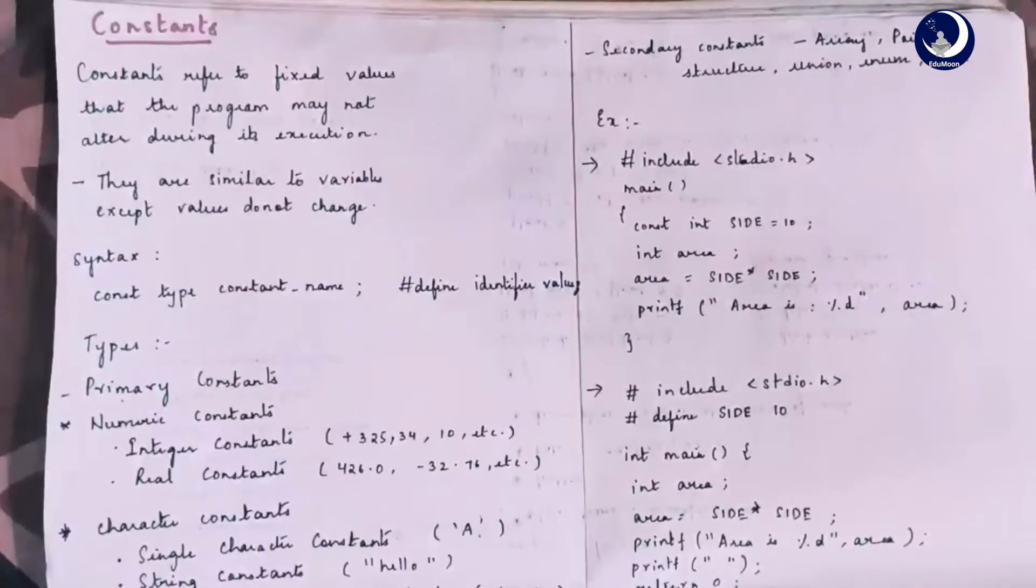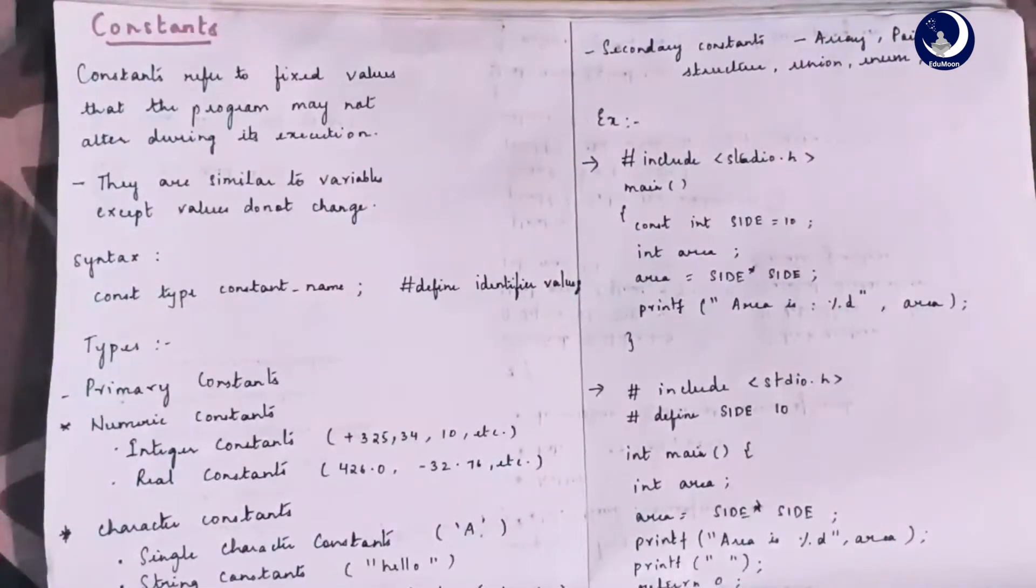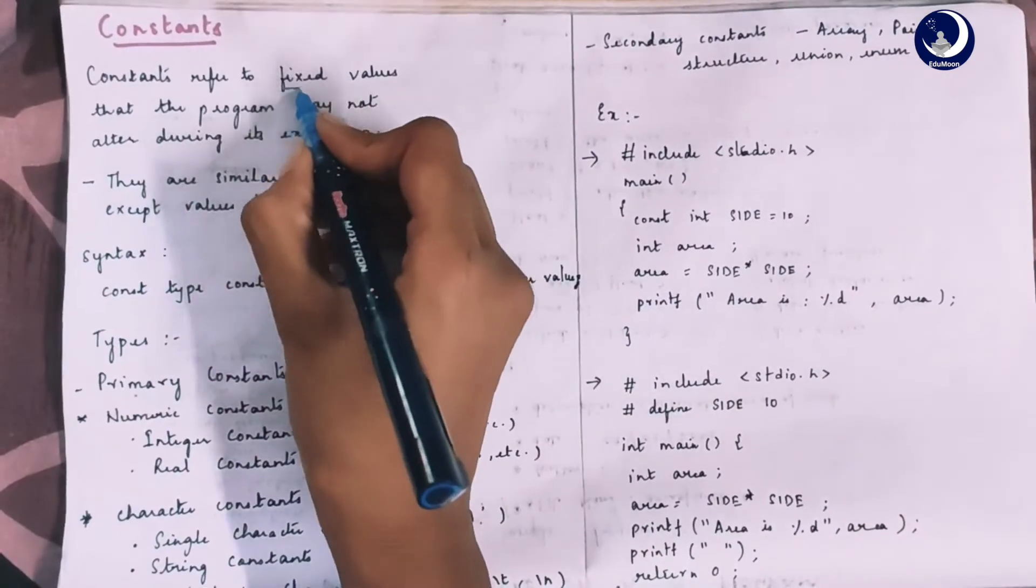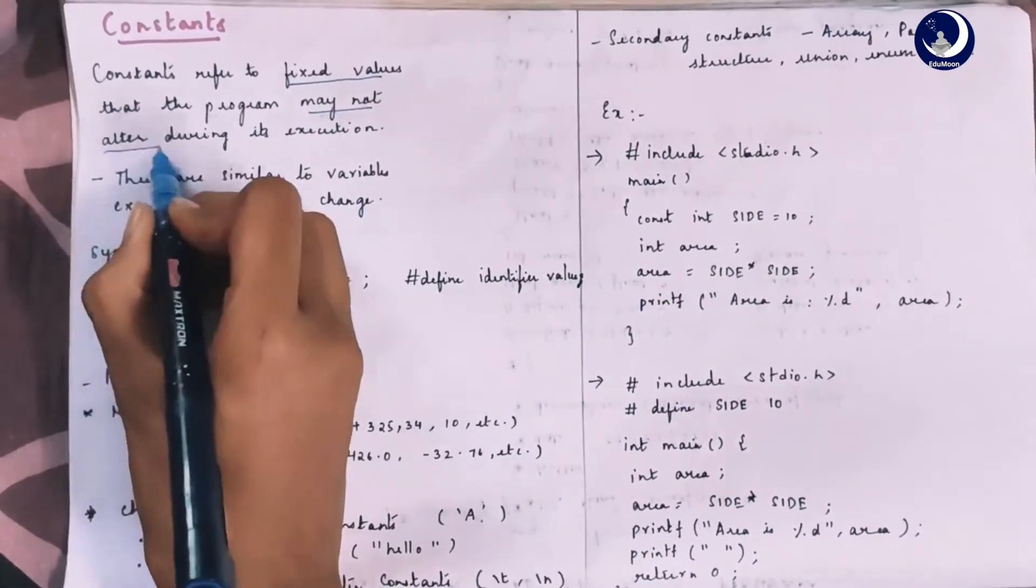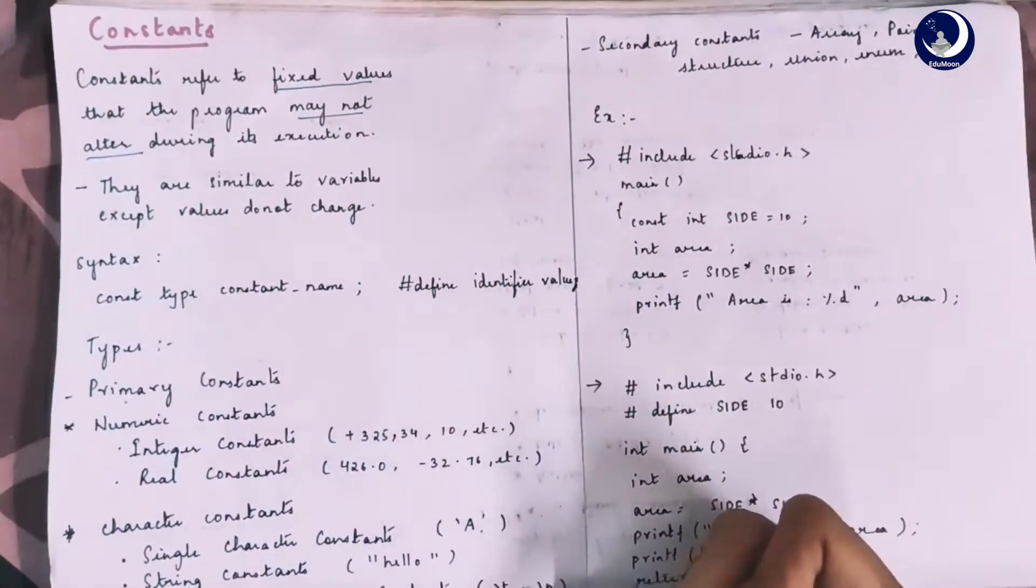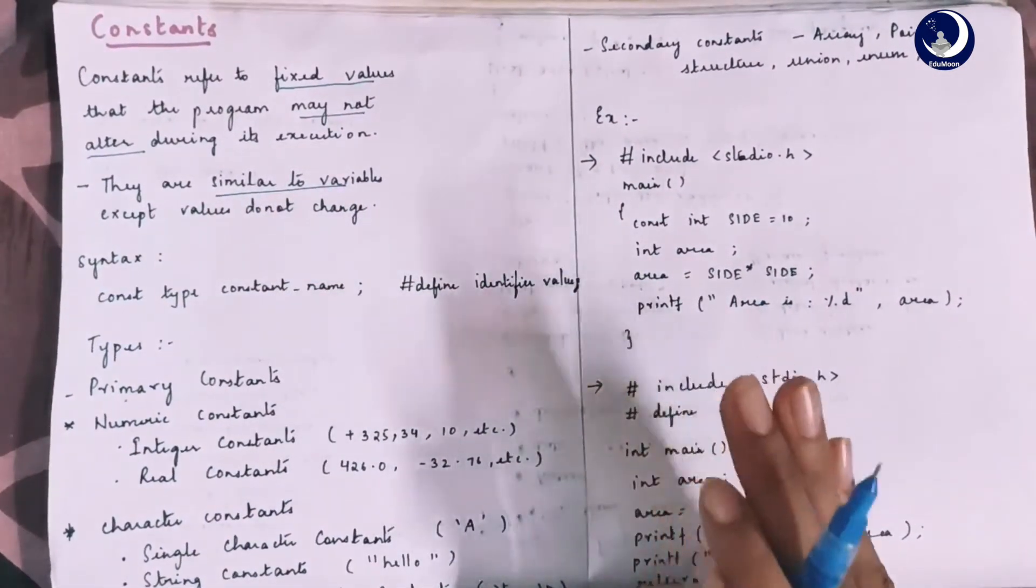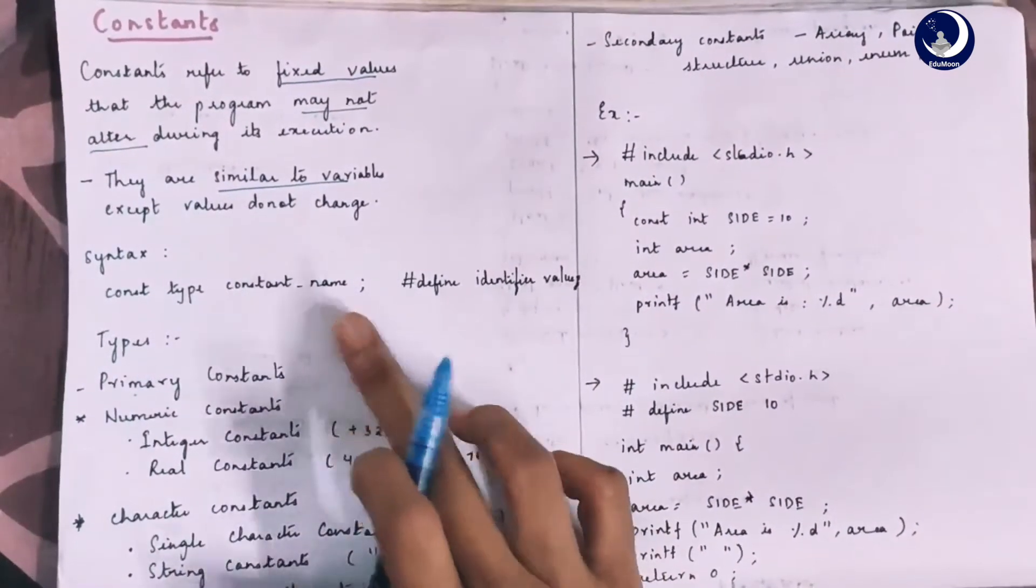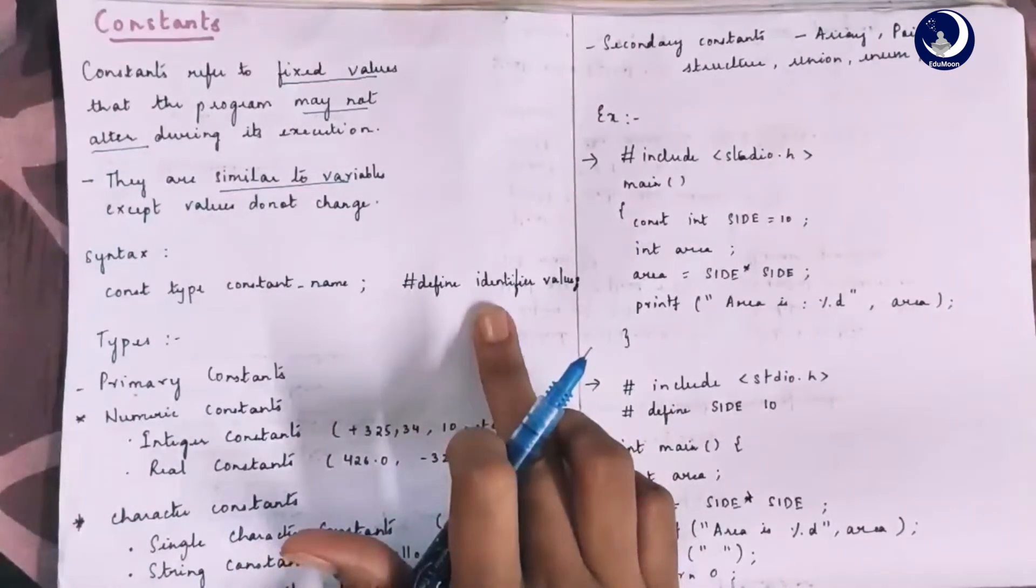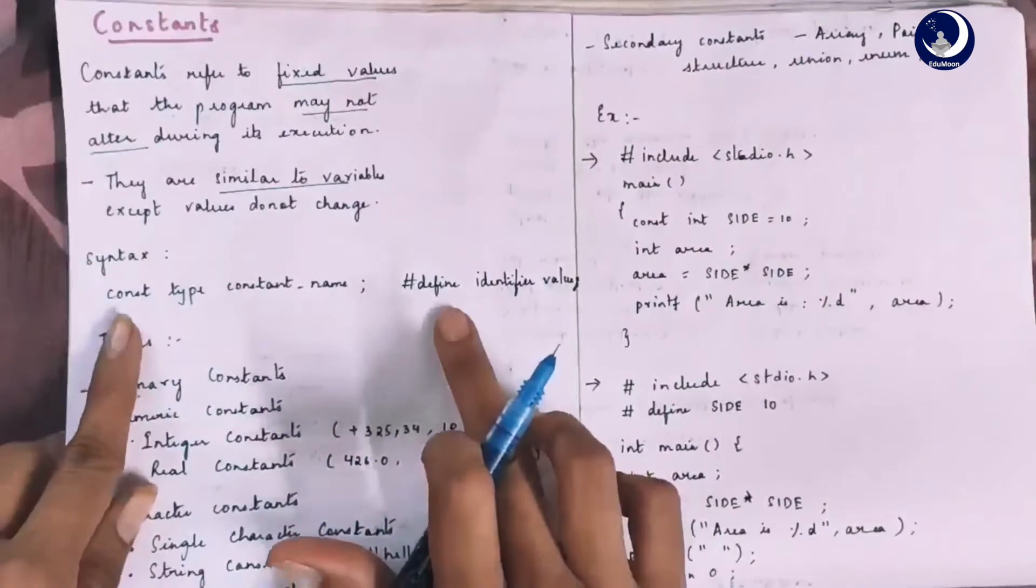The second topic in the lecture is constants. What are constants? Constants refer to fixed values that the program may not alter during the execution. Constants are similar to variables except their values remain same throughout the program. Syntax of the constants: we have two different types of defining the constants. One is using the const keyword and two is using the define keyword.